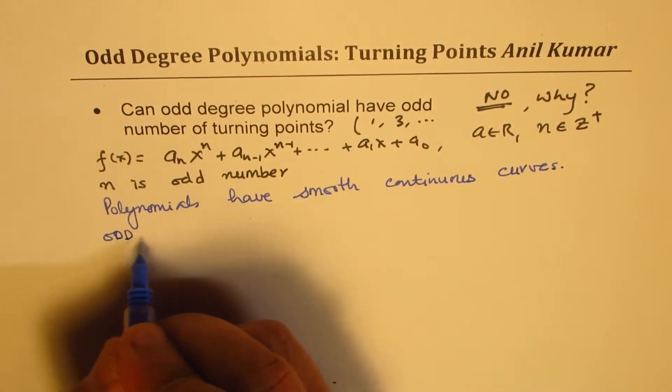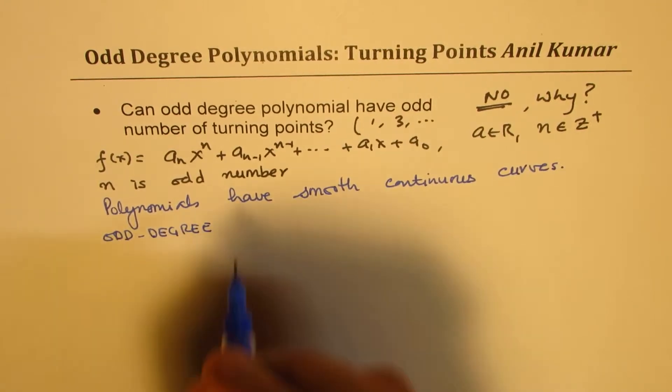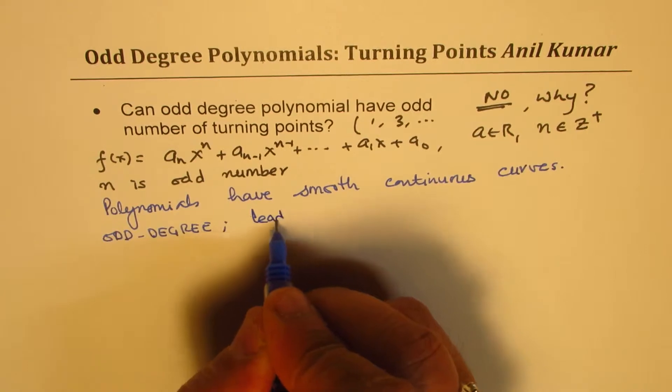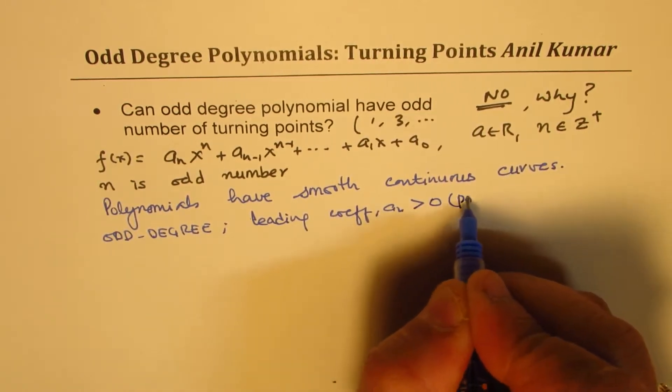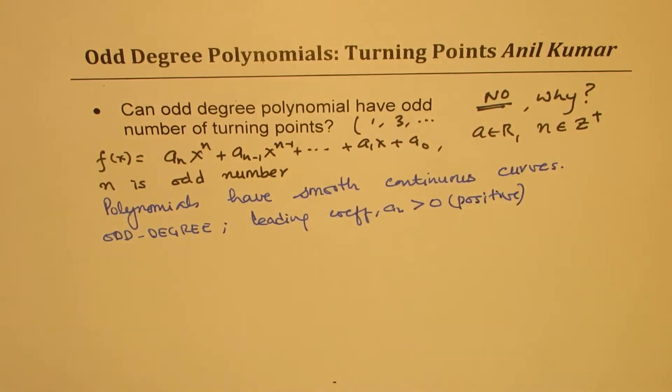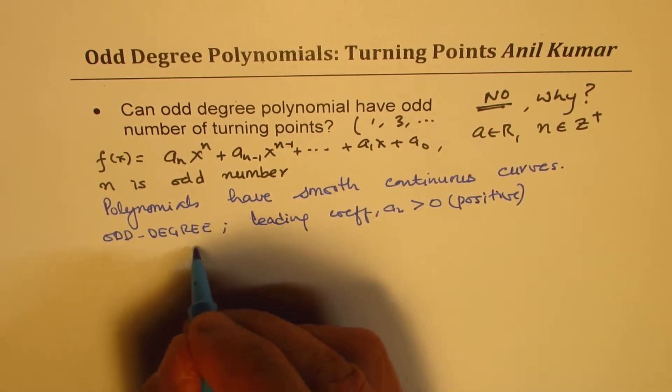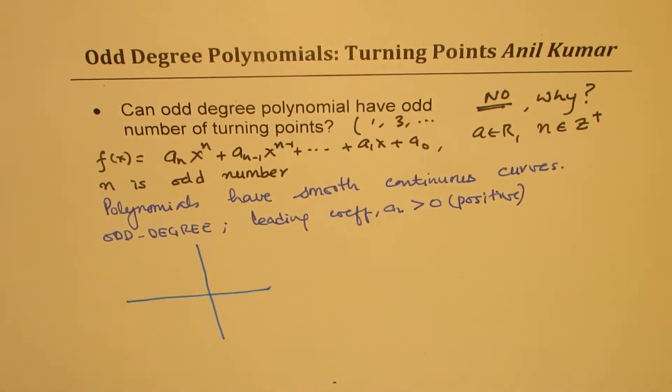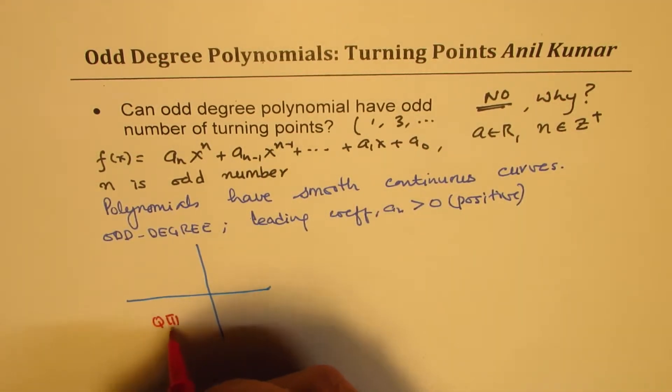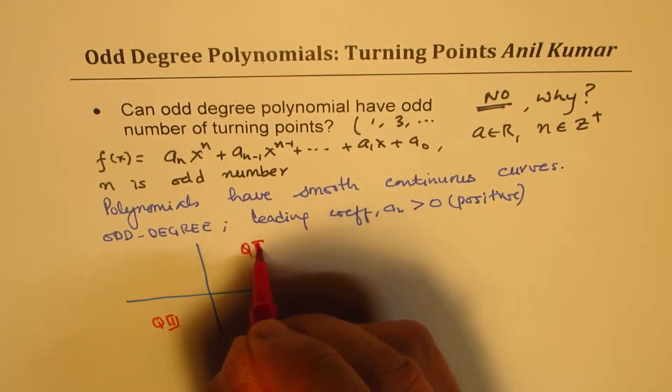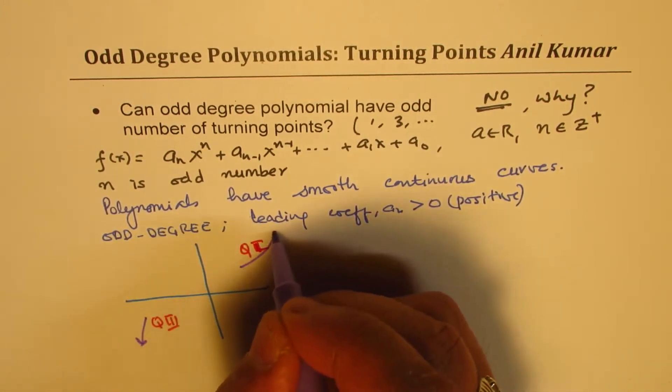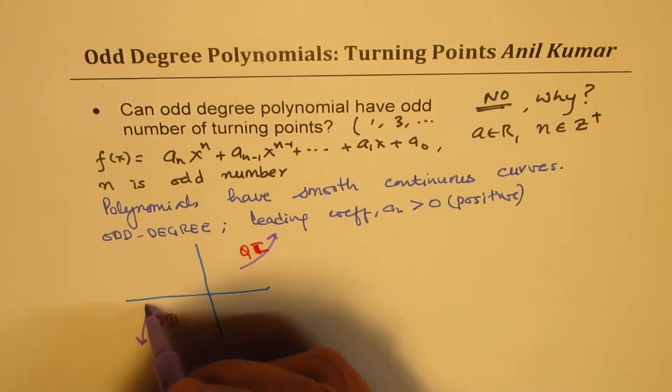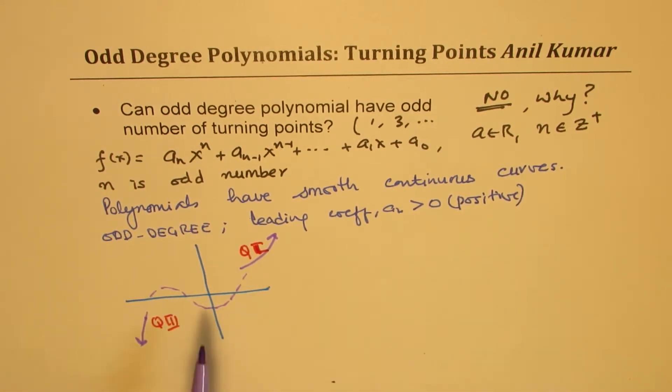As far as odd degree is concerned, if it is odd degree and the leading coefficient An is greater than 0, that means positive, in that case, the behavior is like what? So in that case, we could sketch a graph of the function which will be moving from the quadrant 3 to quadrant 1. So it moves from quadrant 3 to 1. So if you sketch it, it will be ending here, but moving from this to that place. So it could be anyway, kind of going like this. So that is going to be the shape of the graph for an odd degree polynomial.